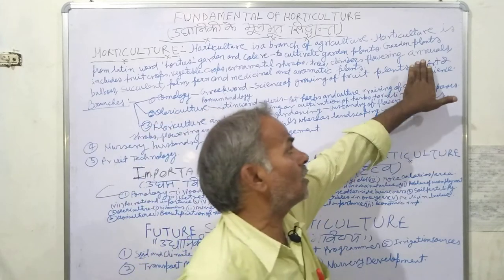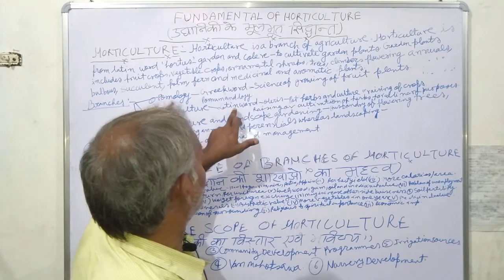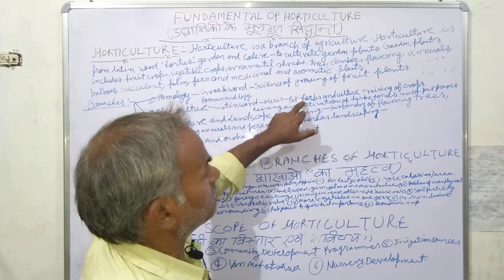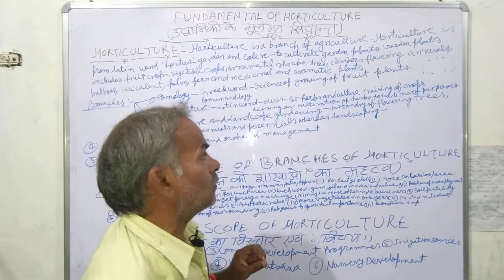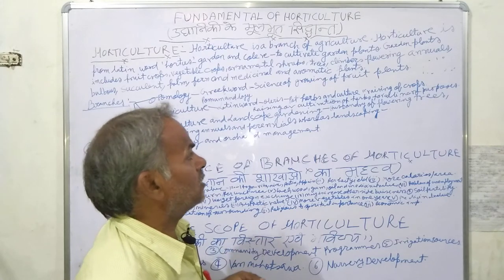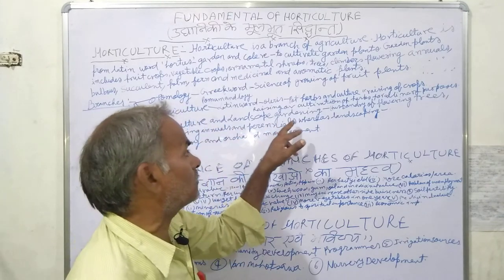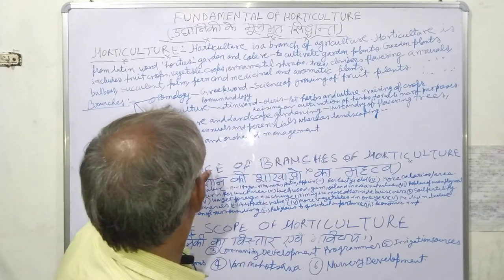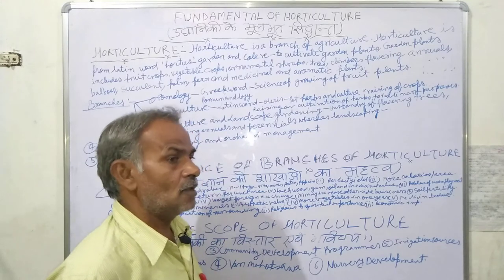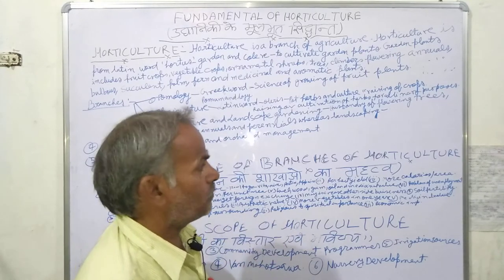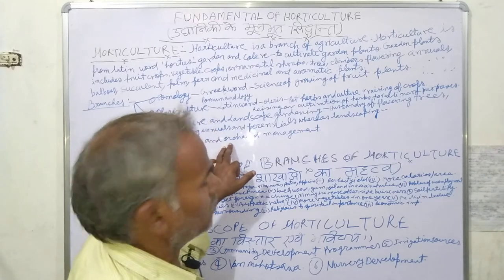Horticulture is both an art and a science. Olericulture is derived from the Latin word 'Oleris' meaning herb and 'culture' meaning raising crops — the cultivation of herbs for culinary purposes. Floriculture deals with flowering trees and perennial flowering plants, while landscape gardening refers to the beautification of a given tract of land.